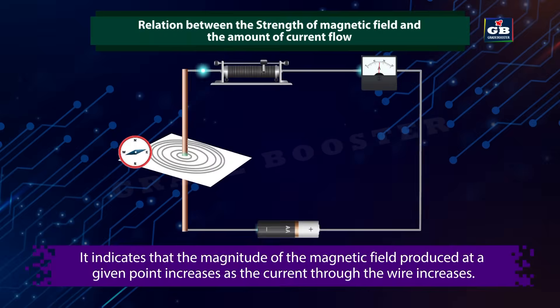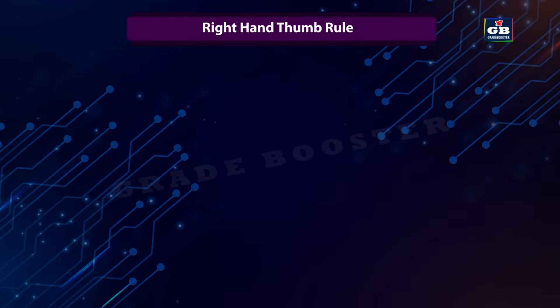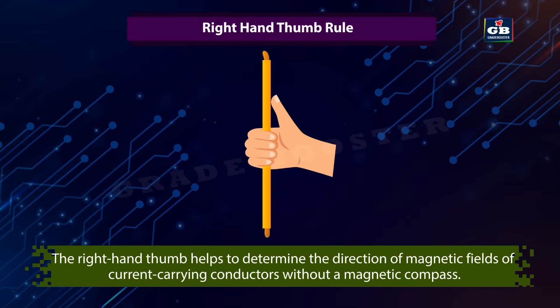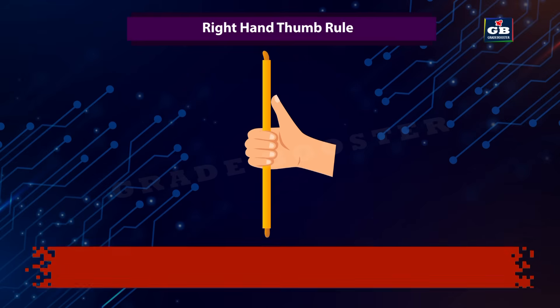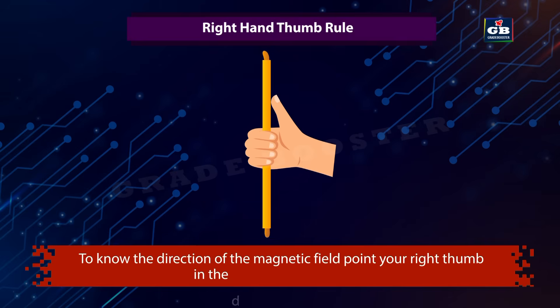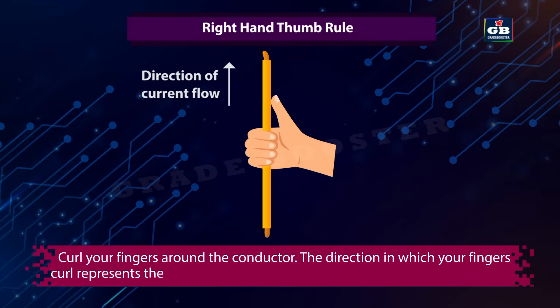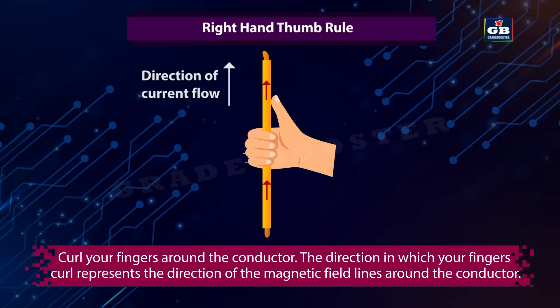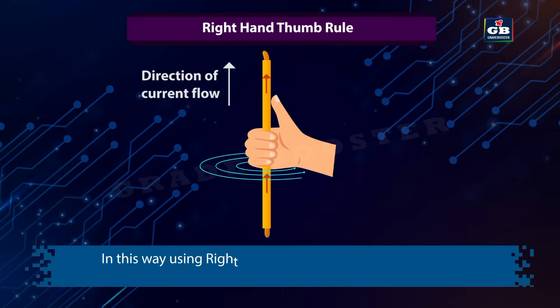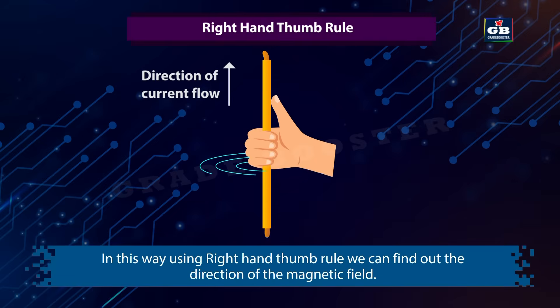Right hand thumb rule. The right hand thumb rule helps to determine the direction of magnetic fields of current-carrying conductors without a magnetic compass. To know the direction of the magnetic field, point your right thumb in the direction of the current and curl your fingers around the conductor. The direction in which your fingers curl represents the direction of the magnetic field lines around the conductor. Using the right hand thumb rule, we can find out the direction of the magnetic field.